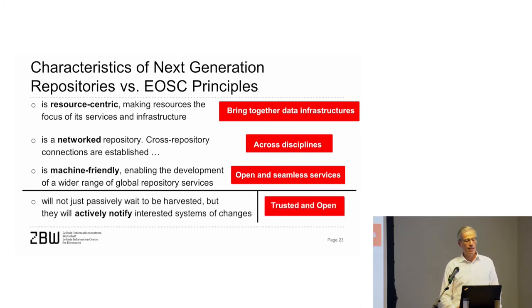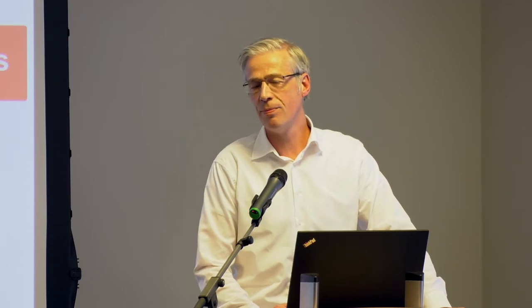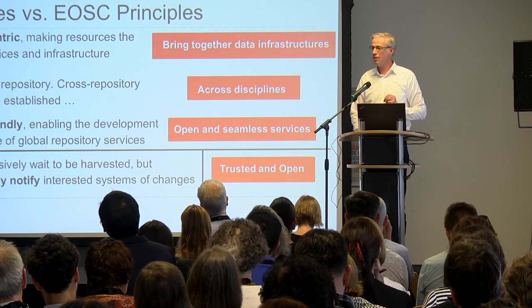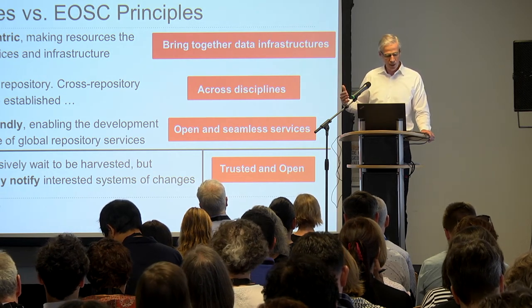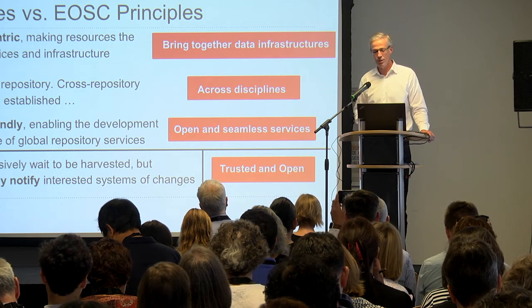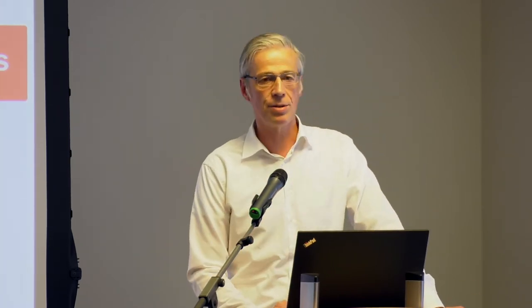In the next generation repository report, you define the characteristic that the repository should be active — in the sense that it actively notifies users or other systems of any changes. In the European Open Science Cloud, we have not thought about this one; it is not addressed in our report that the data infrastructure should take an active role. But the European Open Science Cloud should be an ecosystem of trusted repositories, ensuring that scientists can access documents or research data of high quality — and I haven't found a similar trusted characteristic in the next generation repository report.